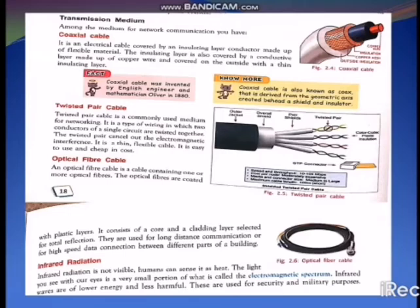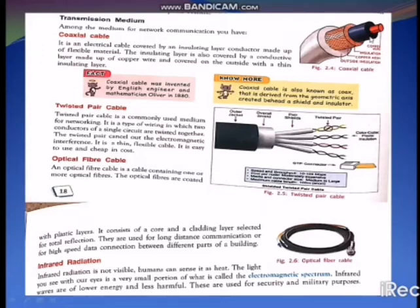The first one is the coaxial cable. The coaxial cable is an electrical cable covered by an insulating layer conductor made up of flexible material. The insulating layer is also covered by a conductive layer made up of copper wire and covered on the outside with a thin insulating layer. In the diagram you can see: here is the copper wire, here is the insulating material, and here is the copper mesh, and outside also an insulating layer.